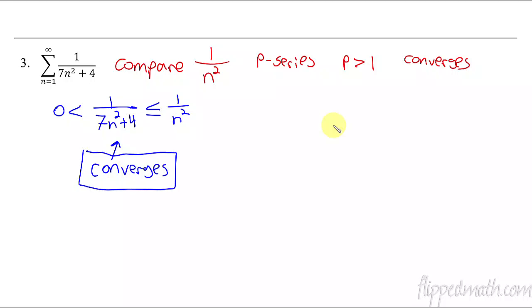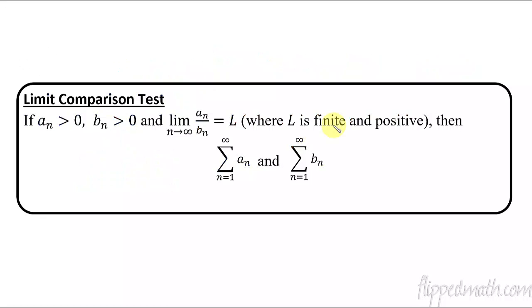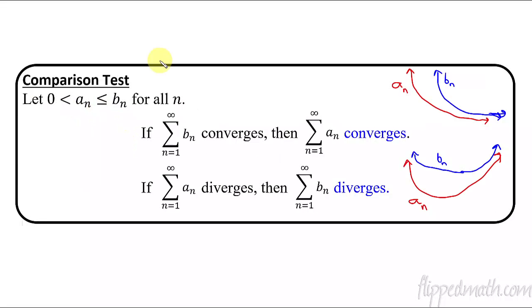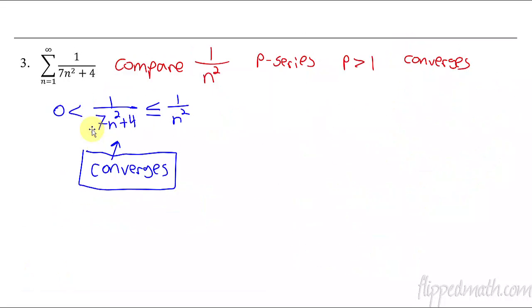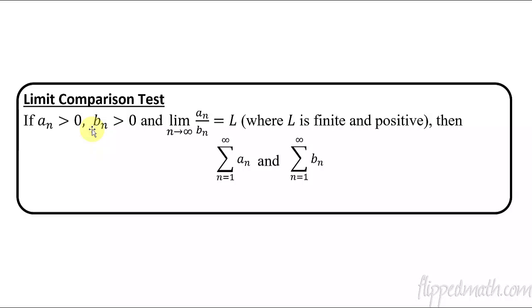All right, so we've covered the comparison test. Now next up, we're going to take a look at what's called the limit comparison test. I will admit, most of the problems I work through, I tend to use the limit comparison test. I just think it's a little easier, only because you don't have to figure out if A or B is larger. All they have to do is both be positive, and then you can work with it. On the other one, we had to know that a_n was smaller than b_n — we had to know which one's larger and which one's smaller to make the comparison test work.